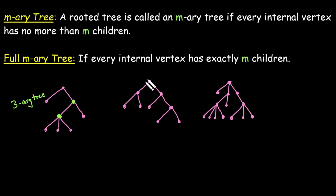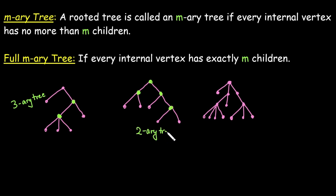In the next figure, this internal vertex has 2 children, this internal vertex has again 2 children, this again 2 children, and this internal vertex again 2 children. So the maximum number of children for any internal vertex is 2, so we call it a 2-ary tree. Now is this a full 2-ary tree? Yes, because every internal vertex has exactly 2 children. So we call it the full 2-ary tree.